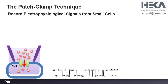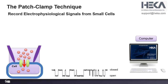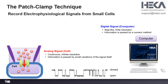The patch clamp technique measures the signal at the cell level at the tip of the pipette and delivers it to the computer. At the cell level we're dealing with an analog signal; the computer of course needs to see a digital signal. So along the way from the cell to the computer, the signal has to be translated from analog into digital.